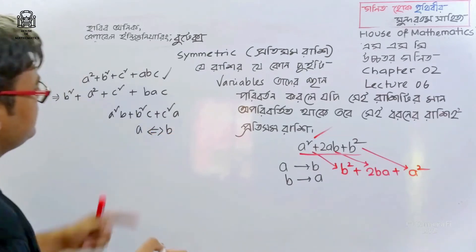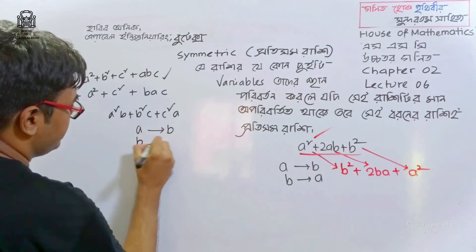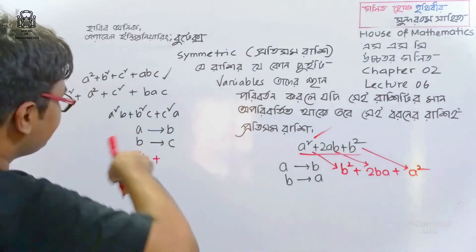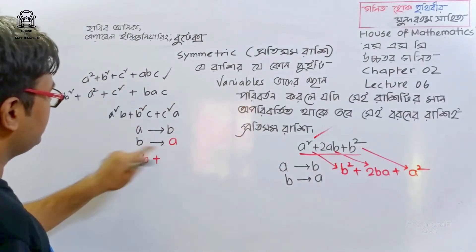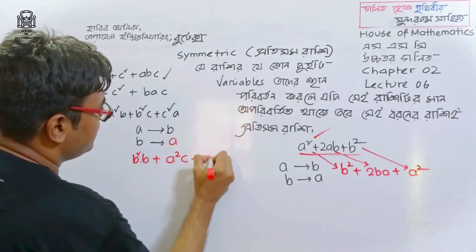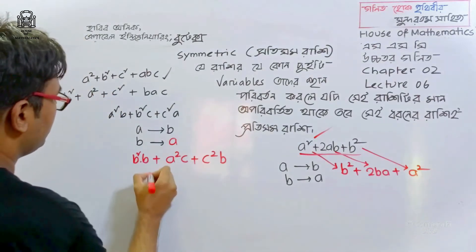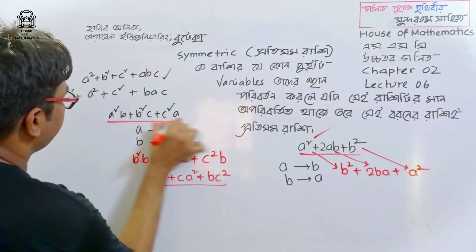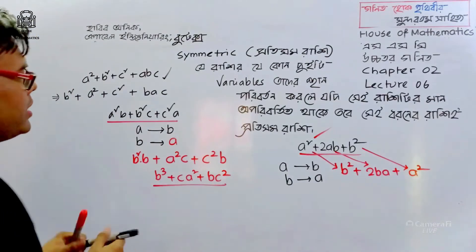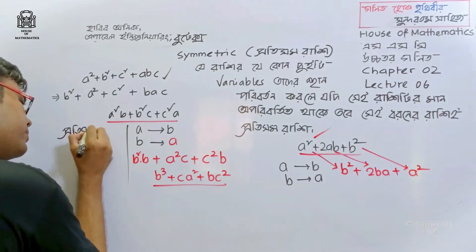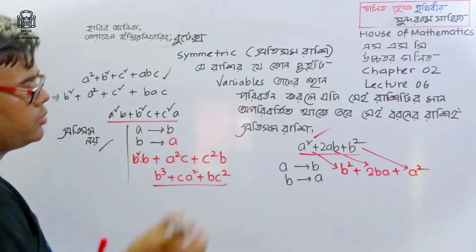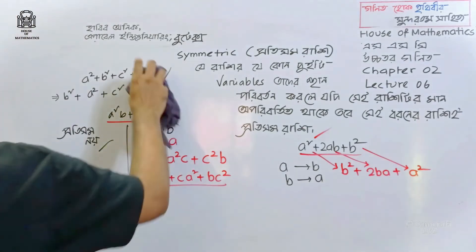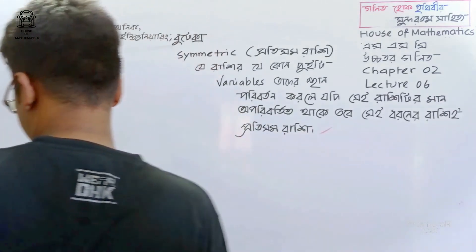If we change A to B, B to C, and C to A — boshia dakhu — we get the same expression back. So a² plus b² plus c², and also b² plus c² plus bc² — it is the same since changing any variable gives us the same result. Just remember this example.